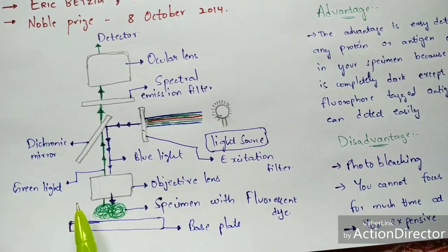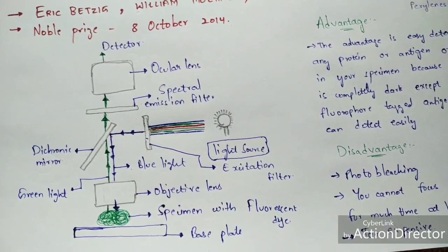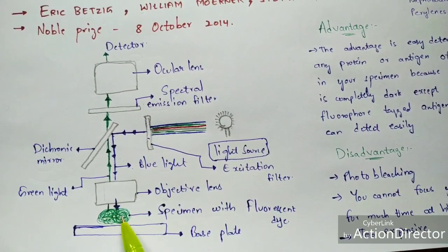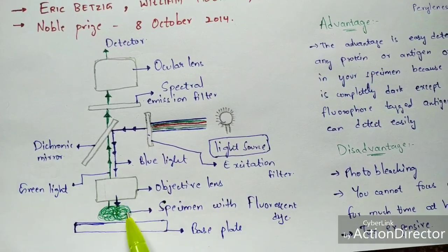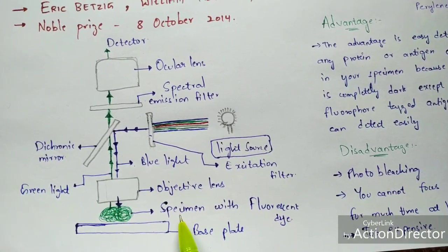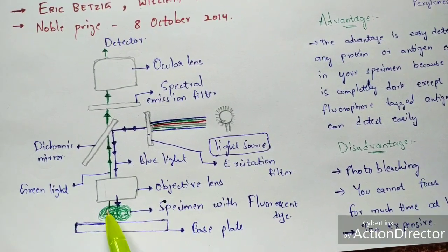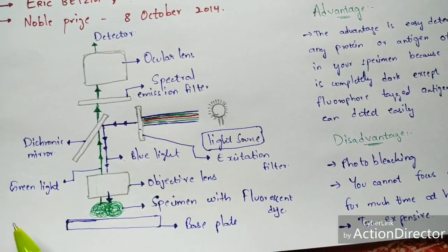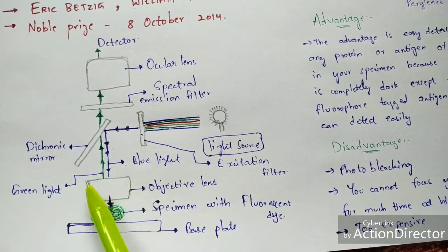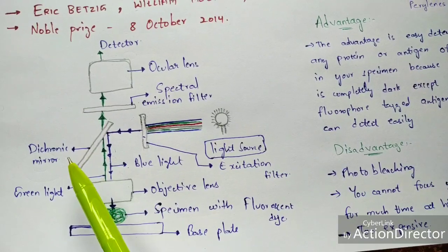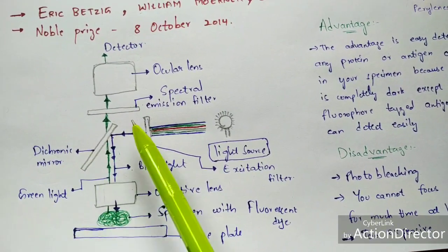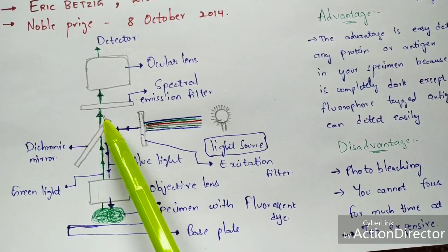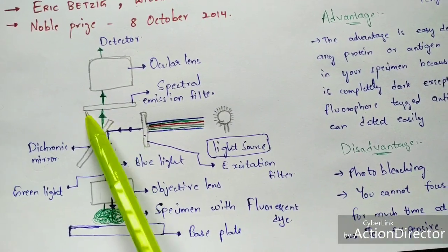The blue color light from the objective lens is allowed to fall upon the specimen. The specimen is mixed with a fluorescent dye, and major fluorescent dyes are green in color. So the specimen emits green color light. Along with the green light, blue color light also travels back through the objective lens to the dichroic mirror. The dichroic mirror rejects most of the blue color light, and the remaining green color light along with some residual blue light passes on to the spectral emission filter.